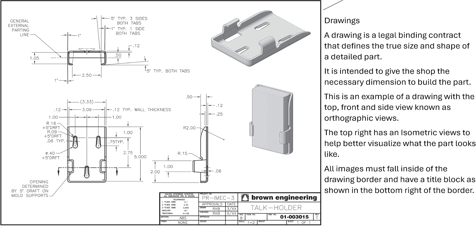The drawing becomes a legal binding contract. If something were to go wrong and there were a design flaw, it would come back to the drawing. If the part were designed incorrectly, the designers would be responsible. If the part were designed correctly but not manufactured correctly, it would be the fault of the manufacturing shop. That's why it's important for the engineering tech to put on the necessary dimensions to properly build the part.